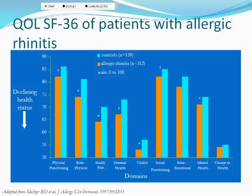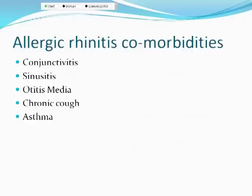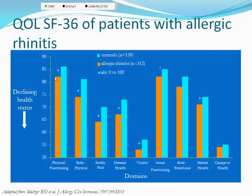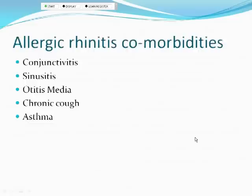Allergic rhinitis also impacts quality of life significantly. Looking at health status scores, patients with allergic rhinitis show lower scores — meaning worse status — in physical functioning, physical ability, body pain, general health, vitality, and mental health compared to controls.